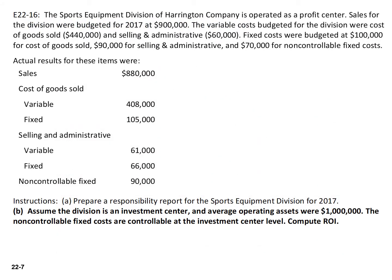In Part A, you prepared a responsibility report for Sports Equipment Division and assumed it was a profit center. Now assume that the division is an investment center. It has operating assets of $1 million, and at this point the non-controllable fixed costs are controllable at the investment center level. Go ahead and calculate ROI assuming this is an investment center.